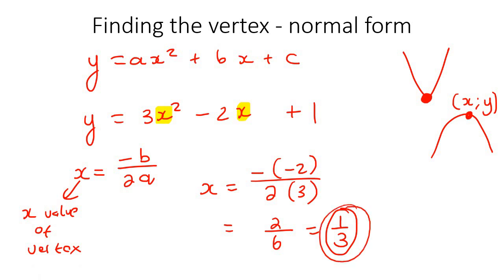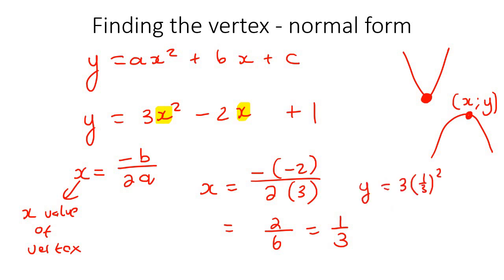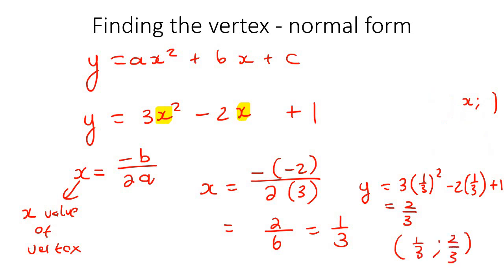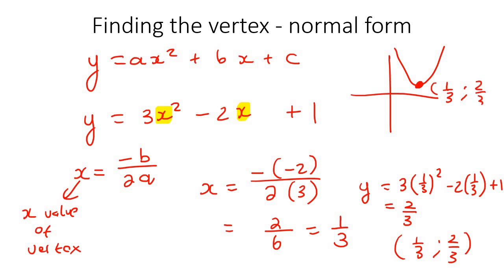Let's quickly plug that 1 over 3 into the equation to find the y value. It's going to be 3 times (1/3) squared minus 2 times (1/3) plus 1. If you calculate that, you end up with 2 over 3. So our vertex is at (1/3, 2/3). Later when we draw these graphs, the vertex would have an x value of 1/3 and a y value of 2/3.